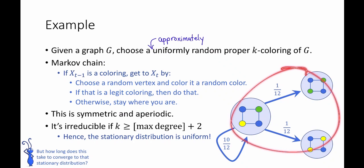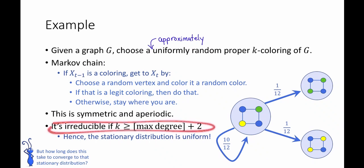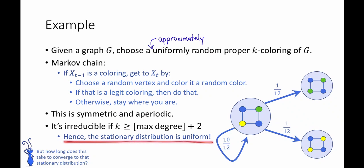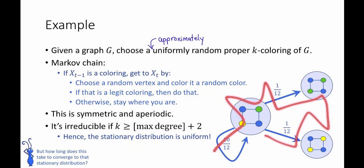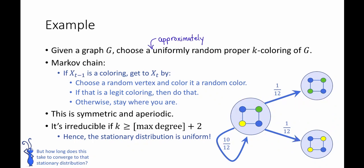In this example k is 3 and the maximum degree is 2, so k is not greater than or equal to 2 plus 2. But actually, for this particular little example, the Markov chain is also irreducible. In any case, as long as this chain is irreducible, we conclude by the fundamental theorem of Markov chains that the stationary distribution is uniform. Therefore, if I want to sample a uniformly random proper k coloring, I can take a walk on this Markov chain and output the coloring after a while. Of course, this raises the question: how long do I actually have to walk to converge? We'll table that for a later video.